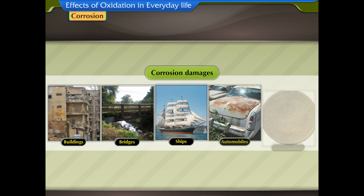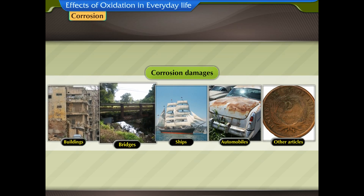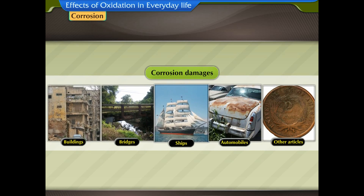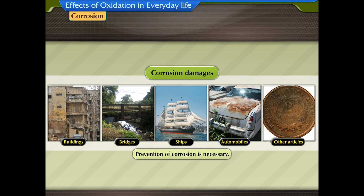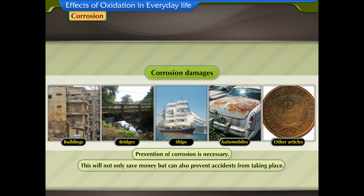Corrosion damages buildings, bridges, ships, automobiles, and other articles made of iron. Hence, prevention of corrosion is necessary. This will not only save money but can also prevent accidents from taking place.